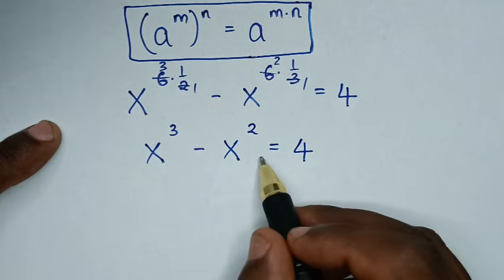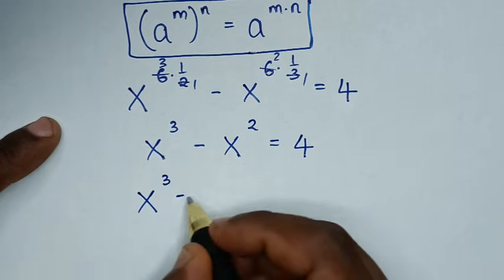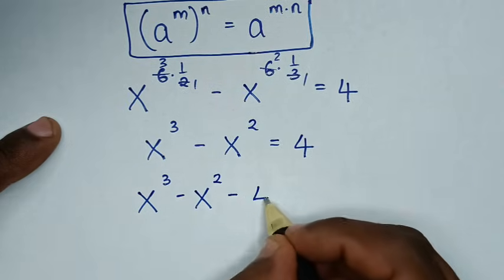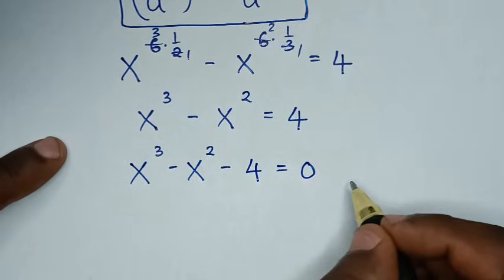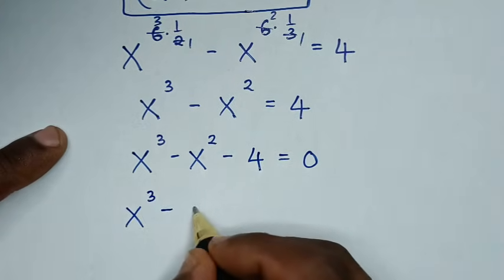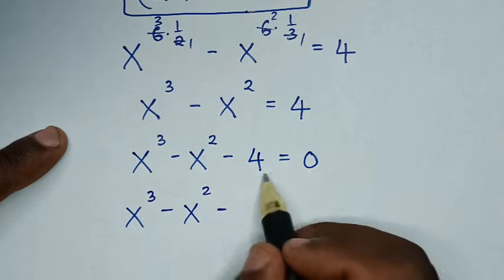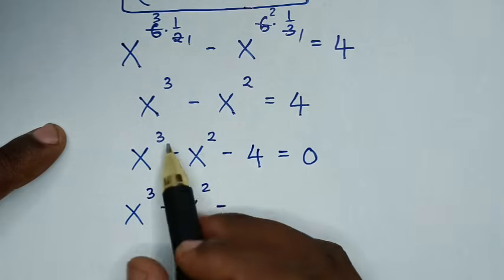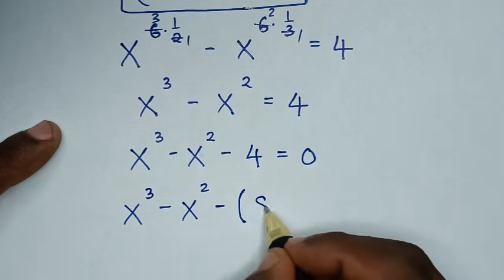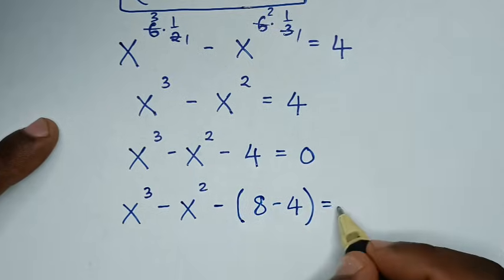We take 4 to the left side, giving x cubed minus x squared minus 4 equals 0. We then split 4 according to the exponents with these powers. So 4 is the same as 8 minus 4, and that equals 0.